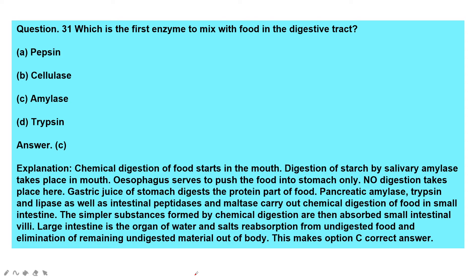Question: Which is the first enzyme to mix with food in the digestive tract — pepsin, cellulase, amylase, or trypsin? The answer is amylase (salivary amylase), as chemical digestion starts in the mouth. The esophagus pushes food to the stomach where gastric juice digests protein. Pancreatic amylase, trypsin, and lipase carry out digestion in the small intestine. The large intestine reabsorbs water and salts and eliminates undigested material.